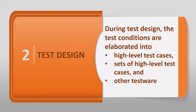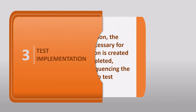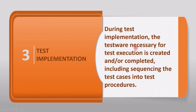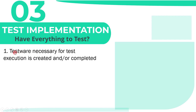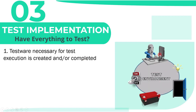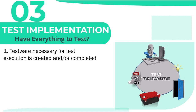After test design comes test implementation. During test implementation the testware necessary for test execution is created and/or completed, including sequencing the test cases into test procedures. During test analysis we ask what to test, during test design we ask how to test, and now during test implementation we ask: do we now have everything in place to run the tests? To test the requirement we need a computer, a switch, a battery, a door, and a light — during test implementation we arrange these and check if they are in a ready state.